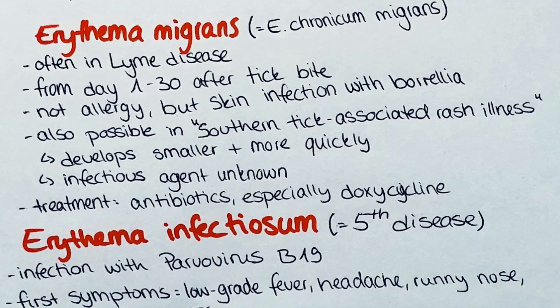The next form is erythema migrans, also known as erythema chronicum migrans. It is often seen in Lyme disease, a tick-borne infection with the bacteria Borrelia burgdorferi. It appears 1 to 30 days after the tick bite and is not due to allergy, as commonly thought, but rather to the skin infection with the bacteria itself. This characteristic rash can also be seen in another tick-borne disease called Southern Tick-Associated Rash Illness, also known as STARI. The causative agent is not known for STARI. Treatment is usually with antibiotics, most commonly doxycycline.